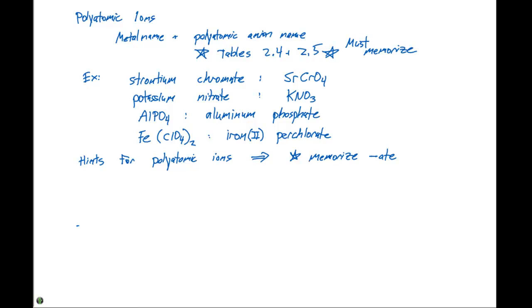So for example, if we look at all the polyatomic ions with the -ate suffix, we have NO3, and it has a minus 1 charge. Then we have SO4, which has a 2 minus charge. So we have nitrate, sulfate, there's also phosphate, which is PO4, with a 3 minus charge.